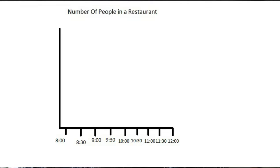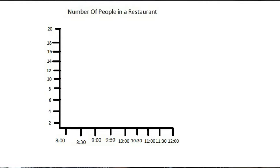Next, let us label the y-axis with the quantity or frequency of people that entered the restaurant. With the highest number 20 as the last number, and since the numbers are divided by 2, we will start with 2, 4, 6, 8, 10, 12, 14, 16, 18, 20. And please forgive my drawing — I am no Picasso.